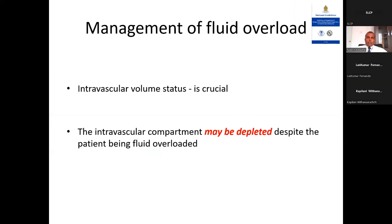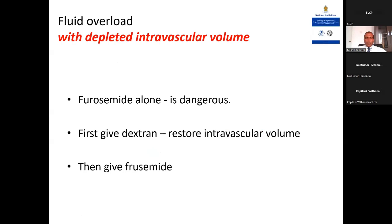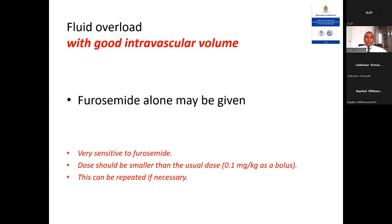Managing fluid overload: intravascular volume status is crucial. The intravascular compartment may be depleted despite apparent fluid overload. If fluid overload coexists with depleted intravascular volume, furosemide alone is dangerous — first give dextran to restore intravascular volume, then give furosemide. If fluid overload with good intravascular volume, furosemide alone may be given. These patients are very sensitive to furosemide — use a smaller dose than usual: 0.1 mg/kg as a bolus, repeated if necessary with caution.